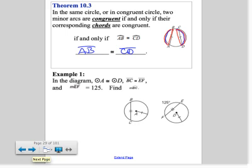Example number one says: in the diagram, circle A and circle D are congruent, BC is congruent to EF, and the measure of arc EF is 125. Find the measure of arc BC.